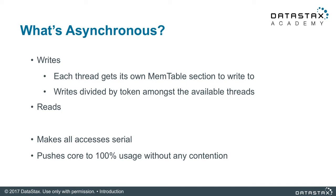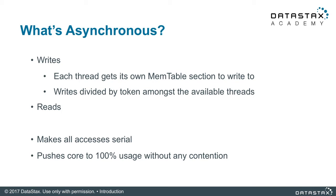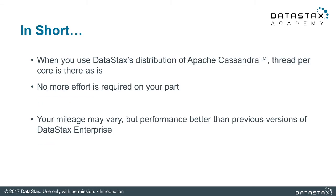Data Stacks Enterprise 6 leaves one core available for operating-specific needs and other low-contention tasks. These include tasks such as flushing a mem table, compaction, hints, and streaming. These tasks work together as they originally did before version 6. However, since they are much less common than reads and writes, you won't see much of any contention here.